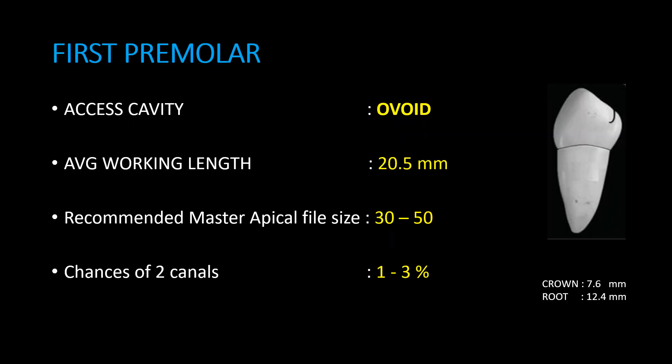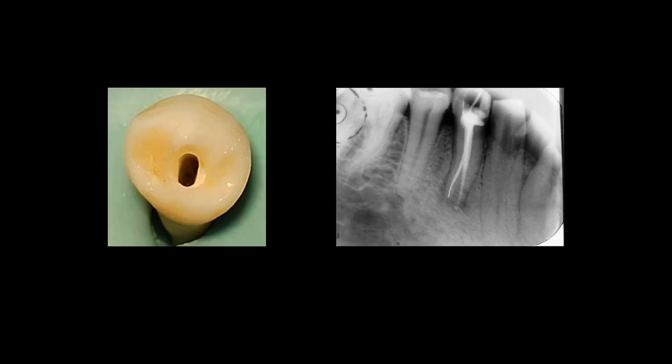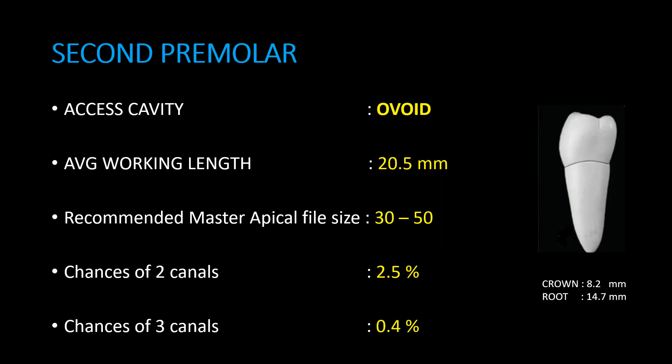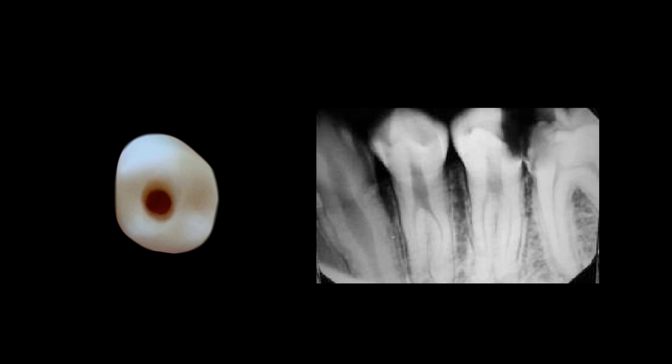First premolar. Access cavity is ovoid shaped. Average working length is 20.5 mm. Recommended master apical file size is 30–50. Chances of two canals is 1–3%. Here, a pic shows ovoid shaped access cavity preparation and radiograph of mandibular first premolar with accessory canal is shown.